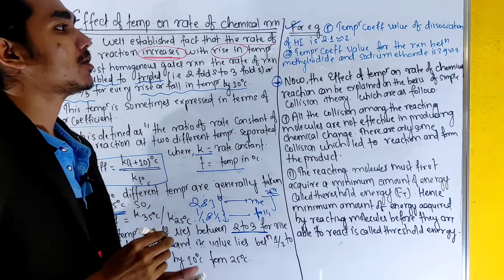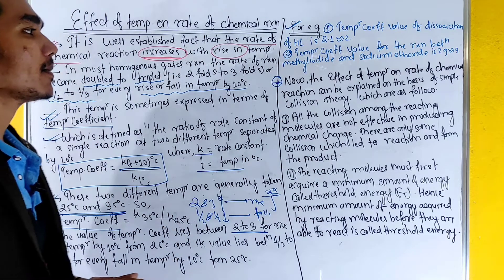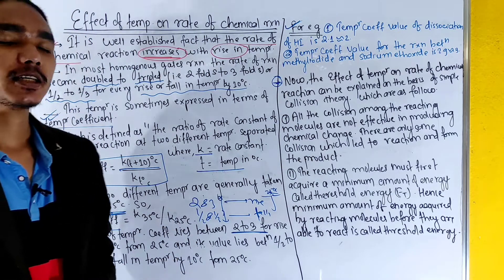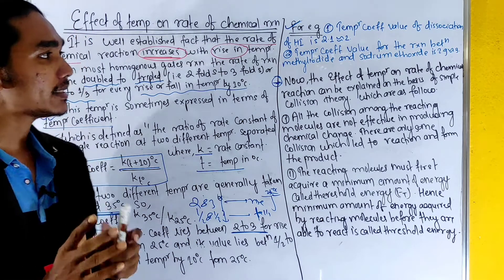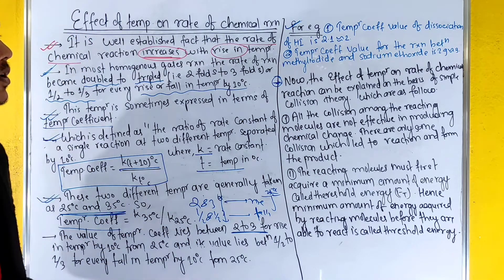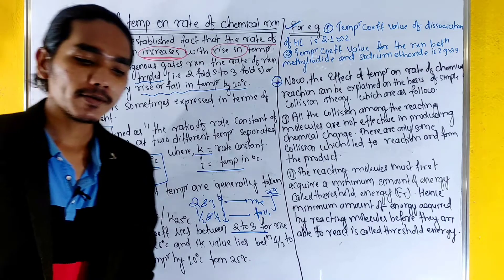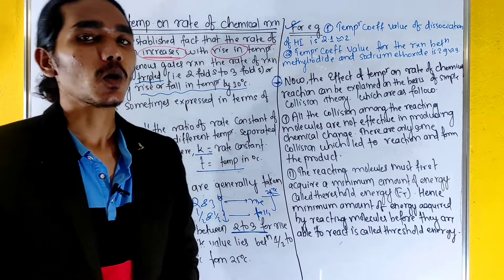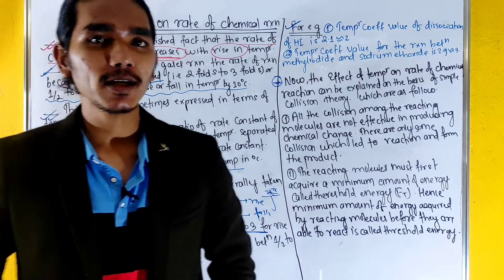The effect of temperature on rate of chemical reactions can be explained on the basis of simple collision theory. What is the collision theory?